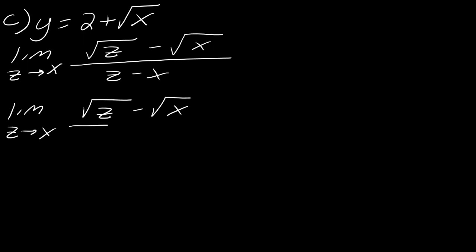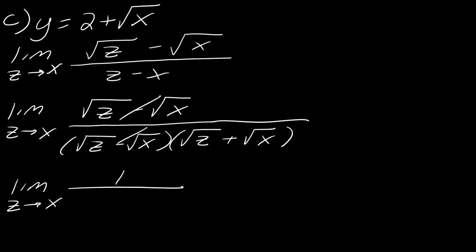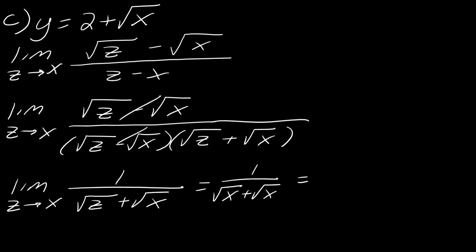Rewriting, I have the limit as z approaches x of (√z minus √x) over (√z minus √x)(√z plus √x). The (√z minus √x) terms cancel, leaving the limit as z approaches x of 1 over (√z plus √x). Evaluating by substituting z with x gives 1 over (√x plus √x), which equals 1 over 2√x. That is the derivative.